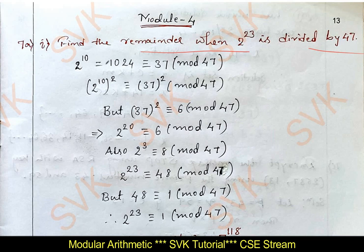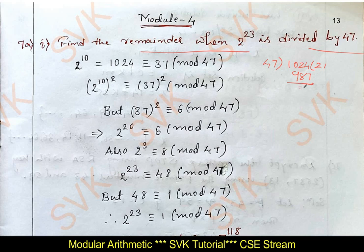For that, I have considered 2 power 10. The value of 2 power 10 is 1024, and 1024 is congruent to 37 mod 47. To calculate this: 47 divides 1024 — it can divide 21 times. The value of 47 into 21 is 987. If you subtract this, we get the remainder as 37. So, 2 power 10 is congruent to 37 mod 47.